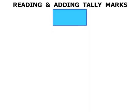In this lesson we're going to work on reading and adding tally marks. What is a tally mark? Basically it's a group of five: one, two, three, four, and the fifth stroke goes across. So when we see that, that is worth five.